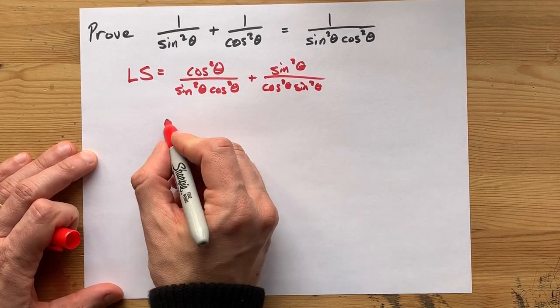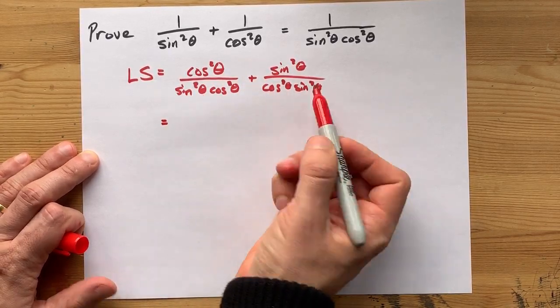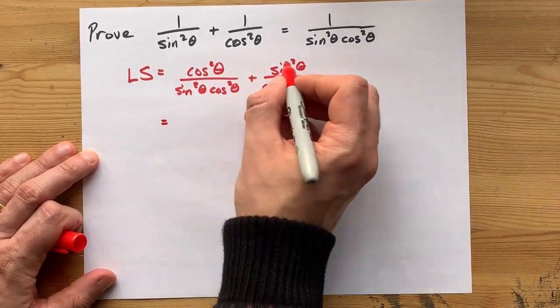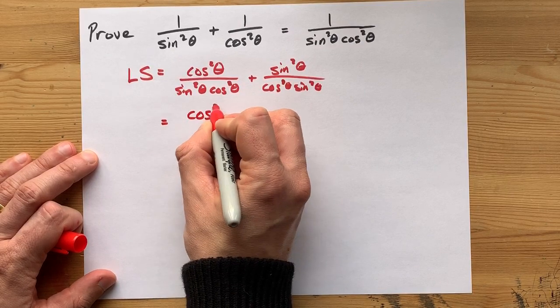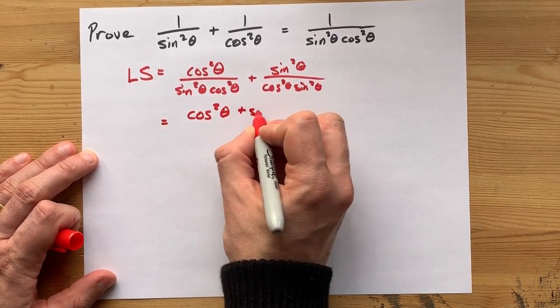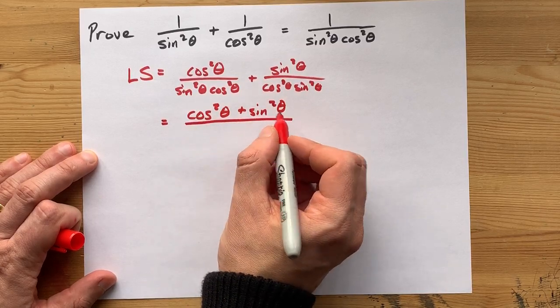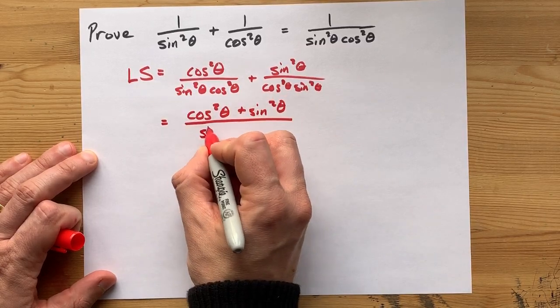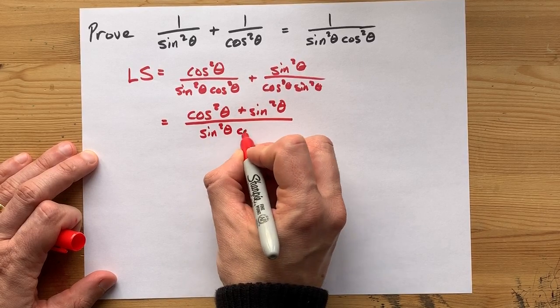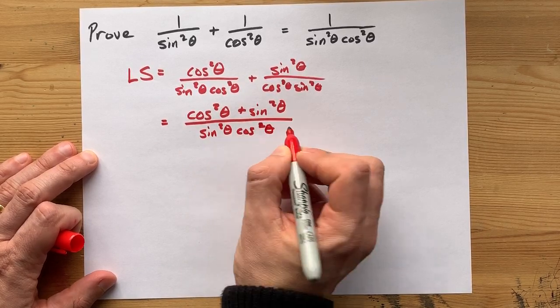So, to combine the fractions, now that they have a common denominator, I can do top plus top. That's cos squared plus sine squared all over, and the bottoms were the same, it was sine squared theta cos squared theta.